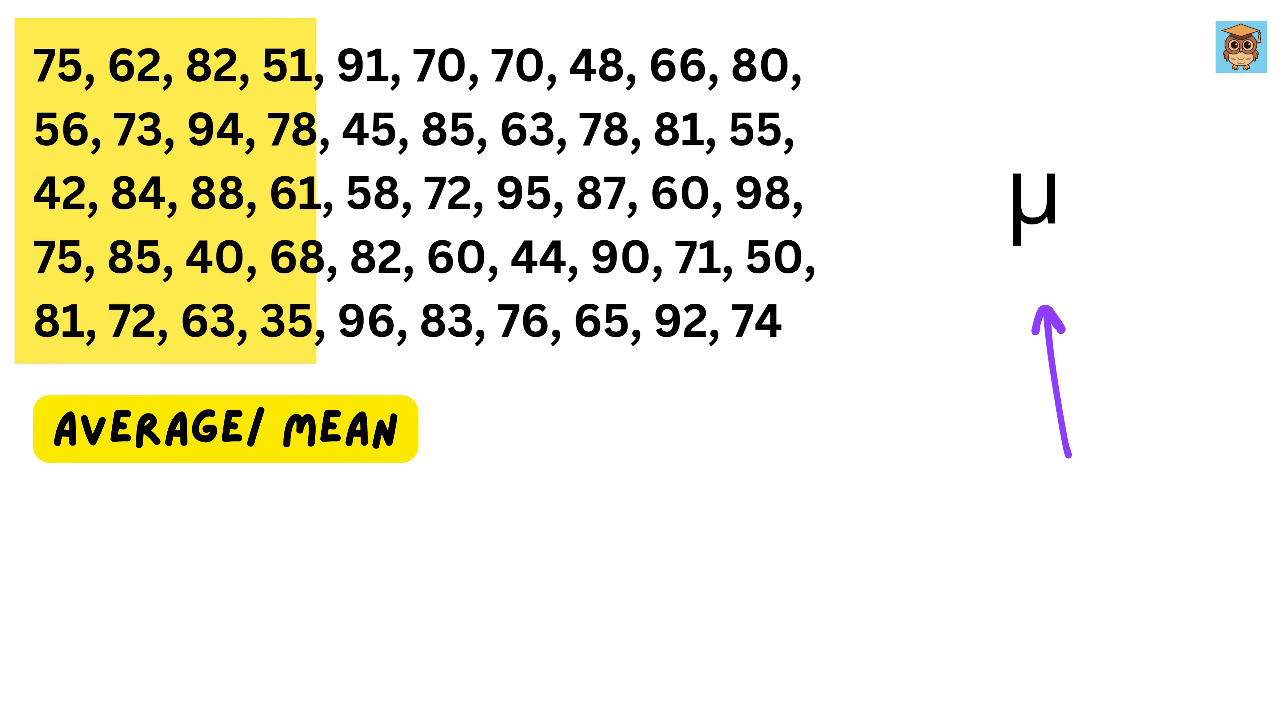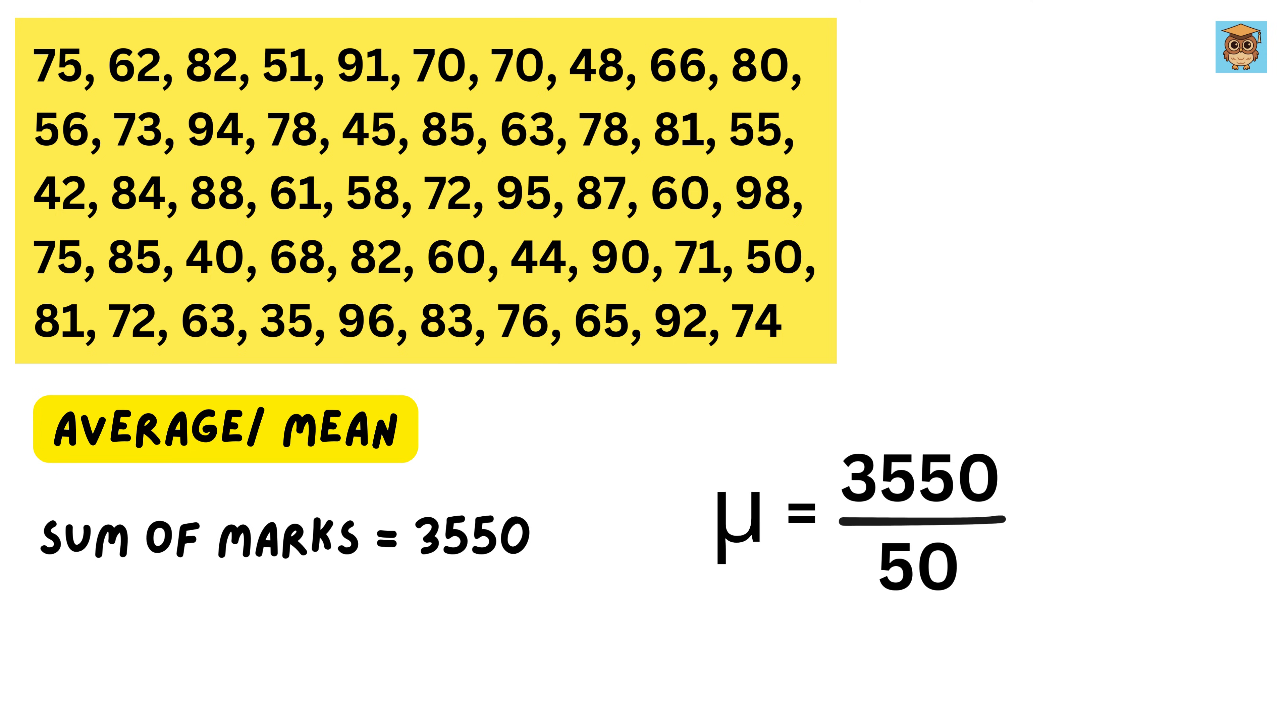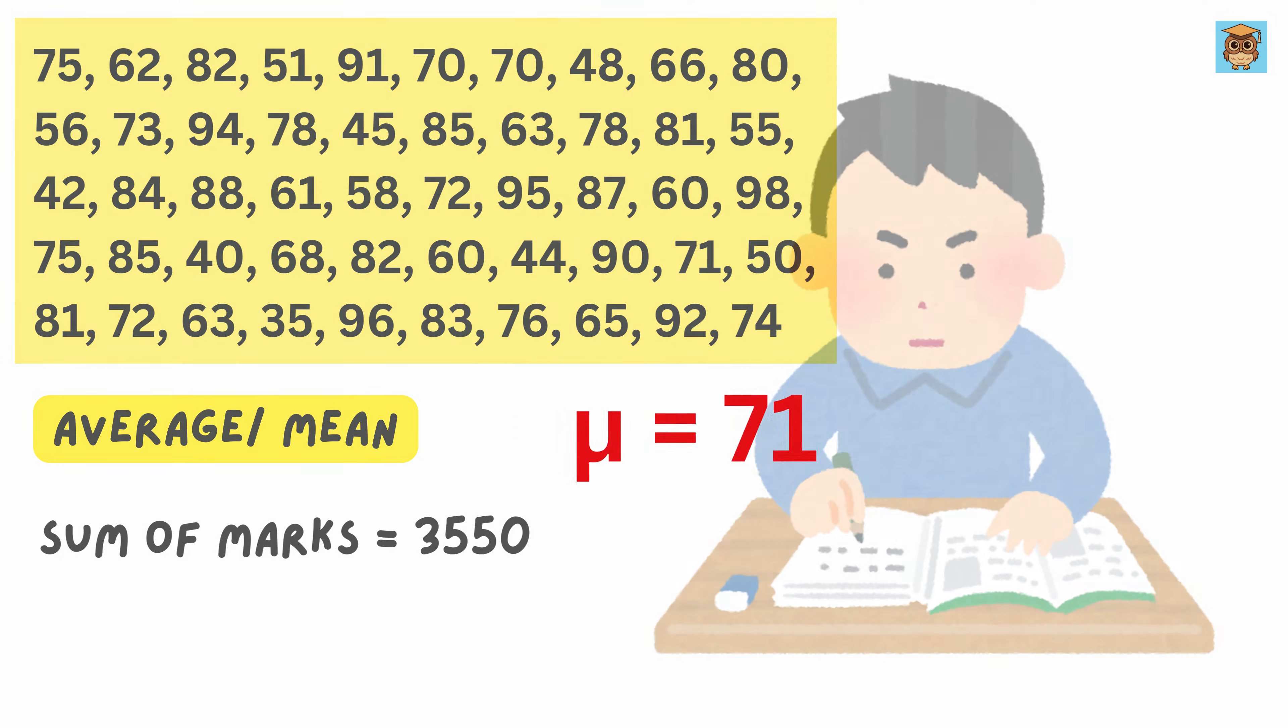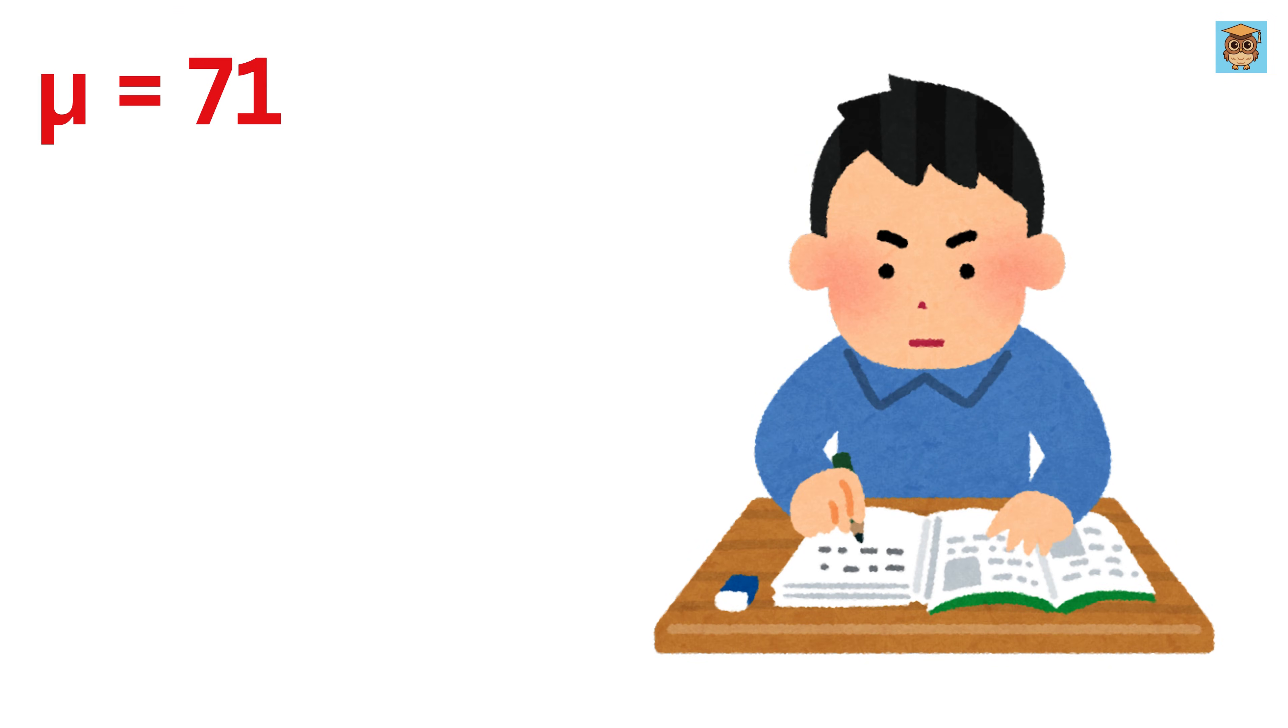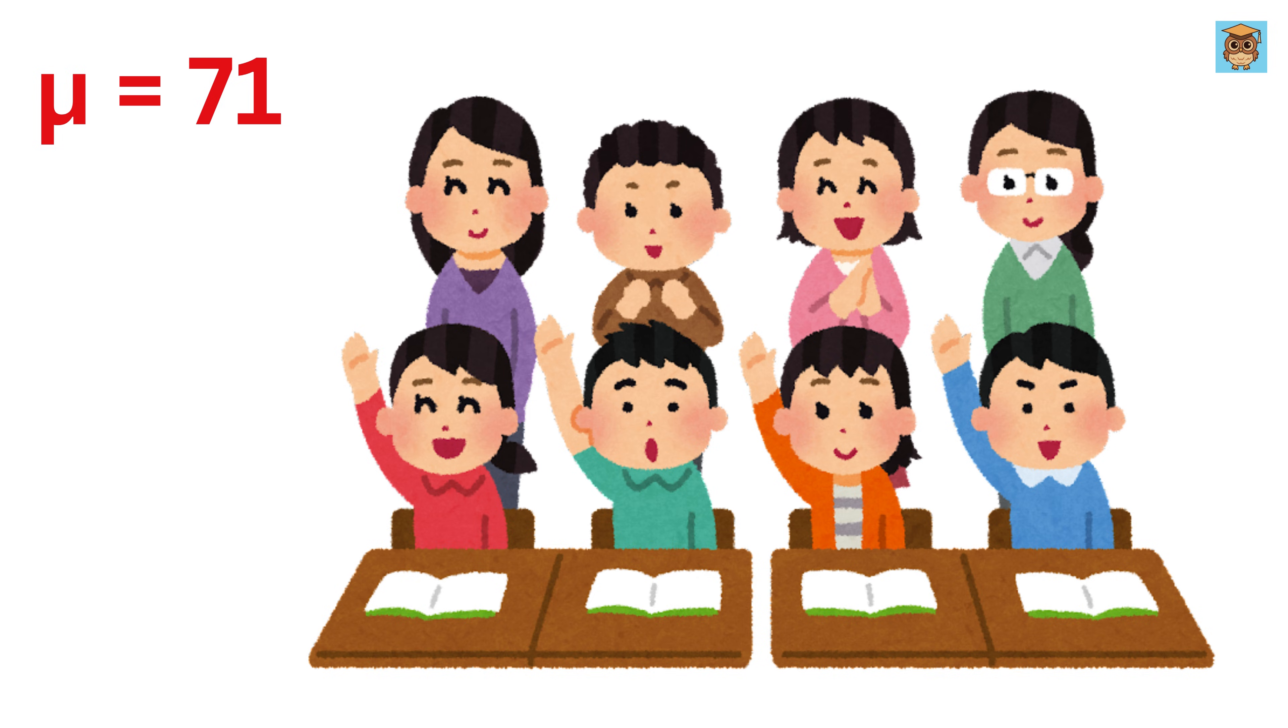Simple. Suppose these are the marks of your 50 students. To find the mean, we add all these marks, which turns out to be 3550, and then we divide it by 50, which is 71. This tells us that, on average, a student in this class scores 71 marks. But this doesn't tell us whether most students are close to 71 or if some students scored really low, while others scored really high.